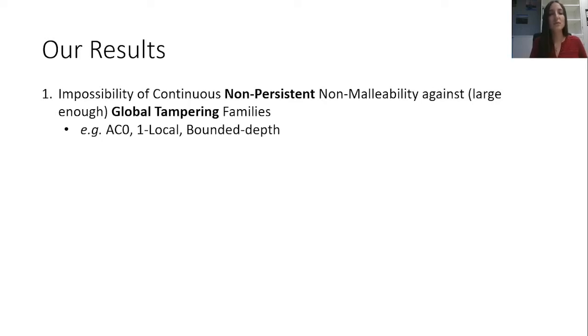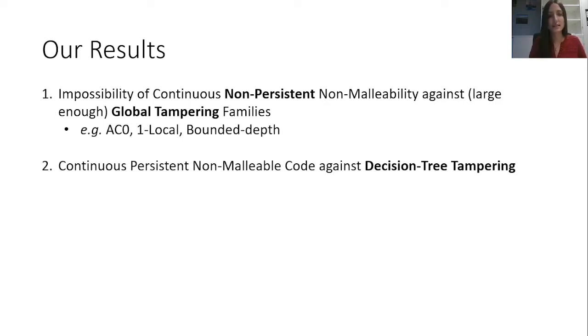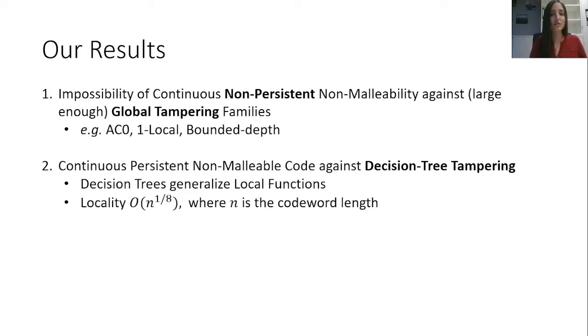Therefore, we move to the persistent setting, and there we provide the first construction of a continuous persistent non-malleable code against decision tree tampering. Why decision tree tampering? Because decision trees generalize local functions. As for parameters, we get locality O(n^(1/8)), where n is the codeword length. For assumptions, we assume only the existence of one-way functions.